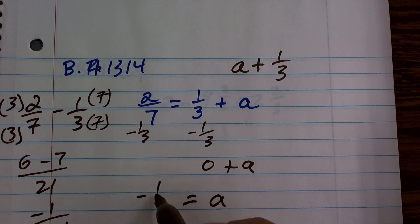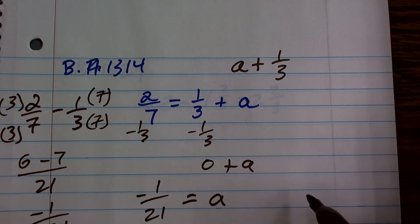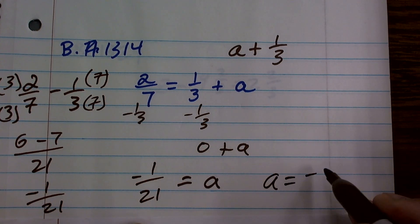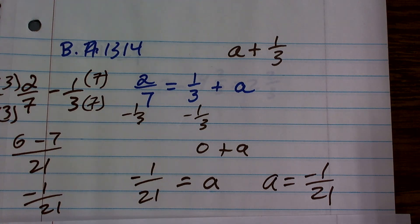So therefore, my final answer is negative 1/21 equals a, or as we always like to write it, a equals negative 1/21. And there you go.